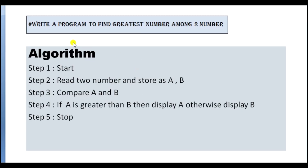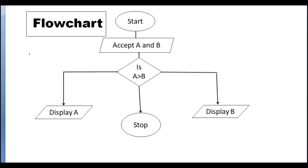In the first program: write a program to find the greatest number among two numbers. Algorithm — Step 1: Start. Step 2: Read two numbers and store as A and B. In the place of 'read', we can write 'accept' also. Step 3: Compare A and B. Step 4: If A is greater than B, then display A; otherwise display B as the greatest number. Step 5: Stop the program.